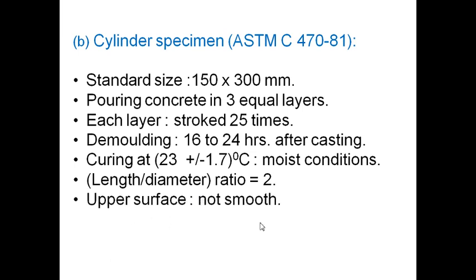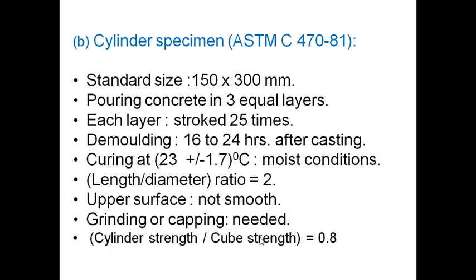The upper surface of the cylinder is not smooth, and therefore grinding or capping is needed. In this case, it is normally found that cylindrical strength divided by cube strength is 0.8. That means on the same concrete, the cylinder strength is 0.8 times that of cube strength.